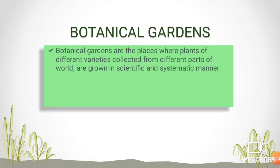Botanical gardens are places where plants from different parts of the world are collected and grown in a scientific and systematic manner. They are important for their records of local flora, serving as places where local flora is recorded and documented.